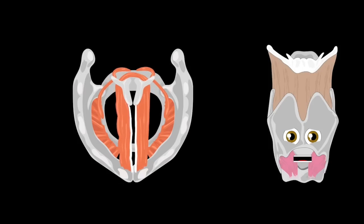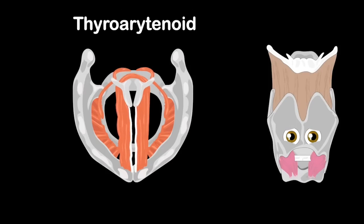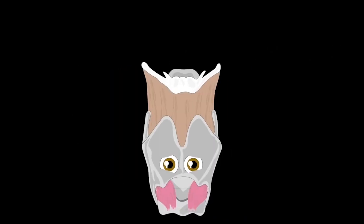Transverse and oblique arytenoids bring vocal folds together to speak. This happens while you exhale — before you sing, breathe in deep. And when you make a lone voice, the thyroarytenoids loosen the vocal folds; they do control.